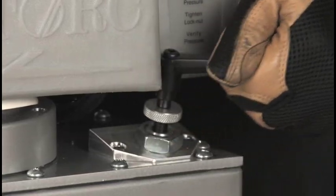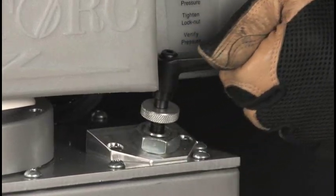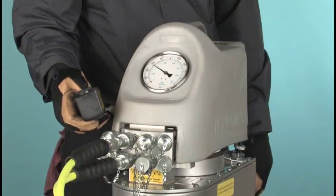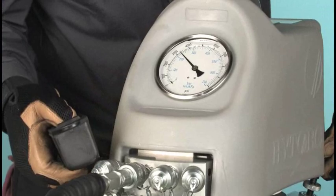Instead, loosen the locking nut under the pressure regulator knob. Unscrew the pressure regulator a few turns until, when you check again, the pressure is below our target of 4,000.